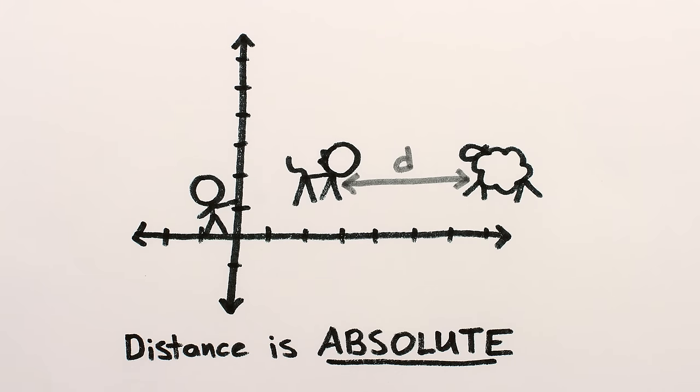Or in relativity parlance, distances are absolute. The geometric intuition for this is that you can move your axes around, slide them up and down, and rigidly rotate them, without affecting your description of the distance between two things.